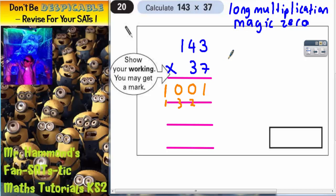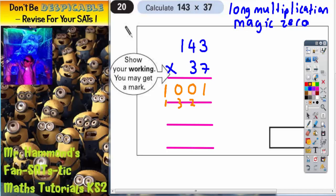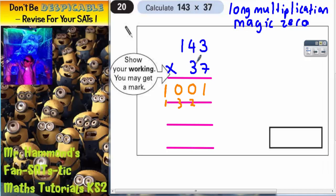Next thing we need to do is we're going to multiply 143 by this 3. But remember this 3 doesn't mean 3. This 3 means 30 because it's in the tens column, 37. So to multiply by 30 you put a magic 0 in and then just times everything by 3 and it has the same effect as multiplying by 30. So put your magic 0 in and now multiply everything by 3.